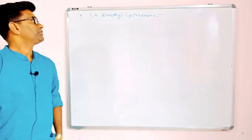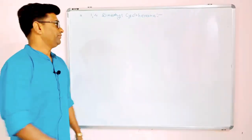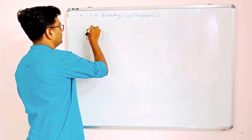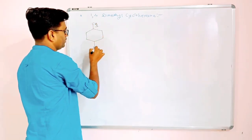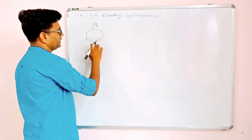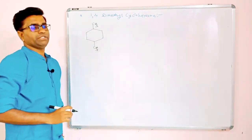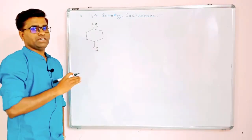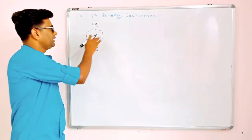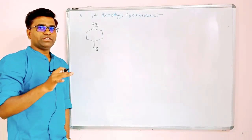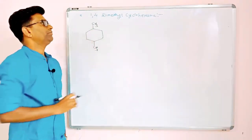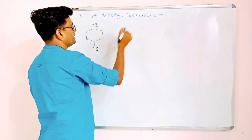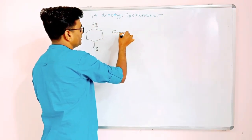Hello friends, now we will learn the stereochemistry of 1,4-dimethylcyclohexane. This is the structure of 1,4-dimethylcyclohexane with carbon numbers 1, 2, 3, and 4. In this case there are two methyl groups, so either these two methyls are on the same side of the molecular plane, or they may be on the opposite side. This means that 1,4-dimethylcyclohexane shows geometrical isomerism.